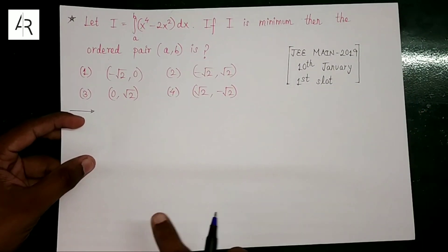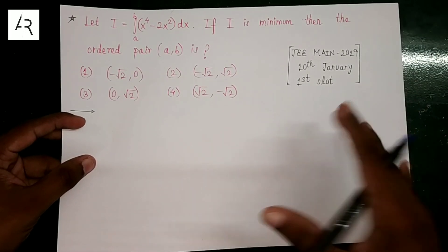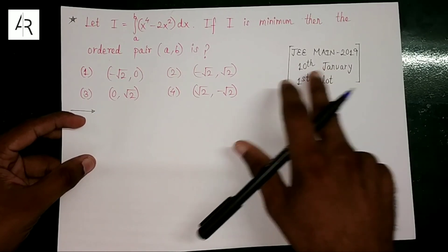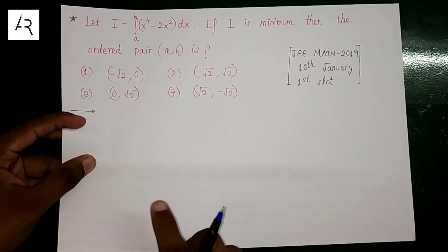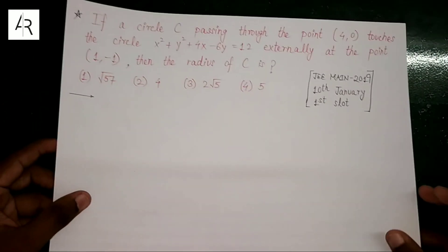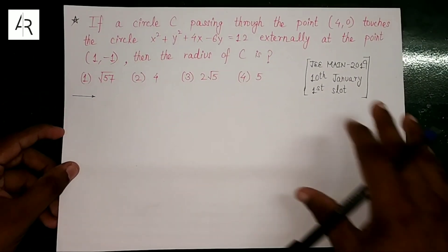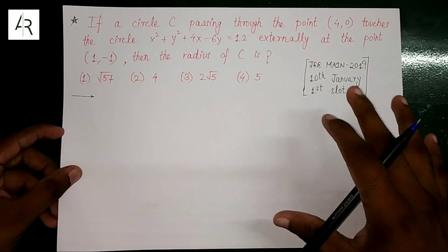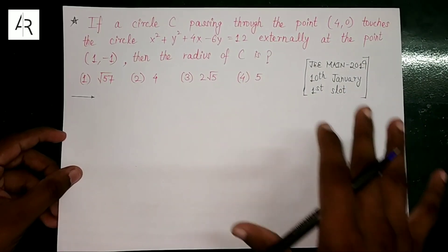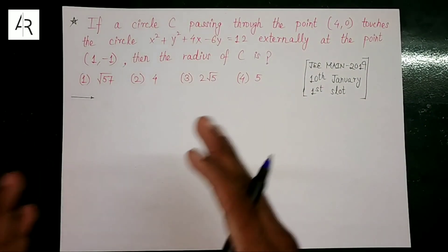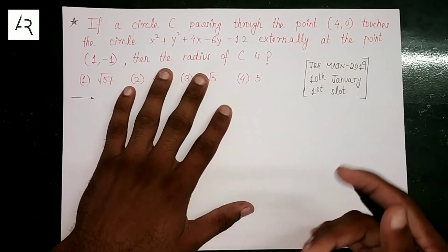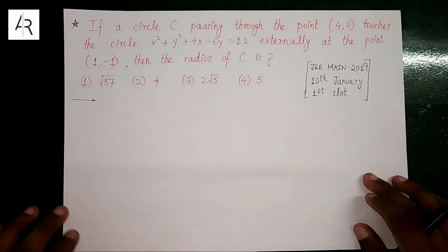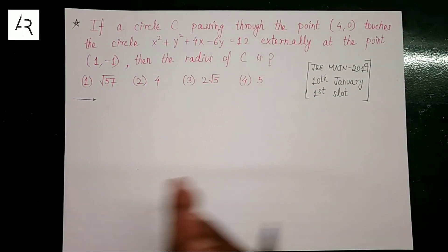In the previous episodes — this is our 76th episode, the last was 75th and before that 74th — we had two questions from the same 10th January 1st shift paper. Now, we will use these two questions using the same method. There are 7 to 8 more questions in this paper where we used the trick in our previous episodes.